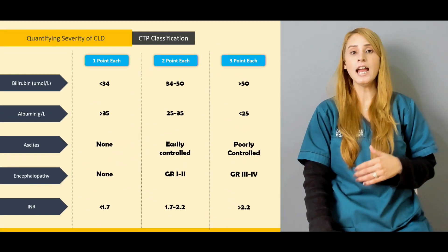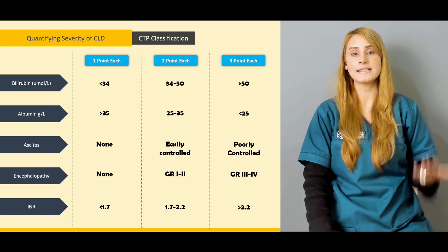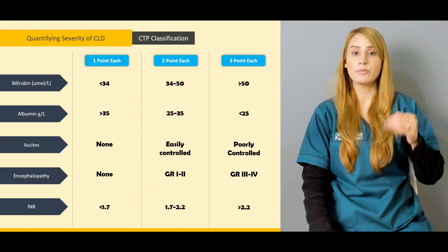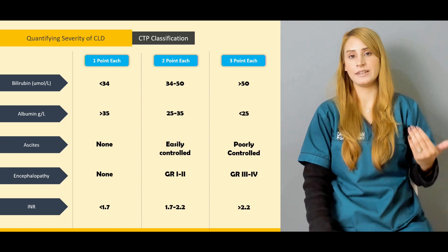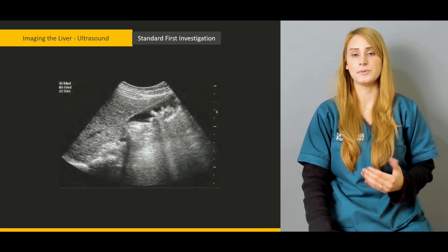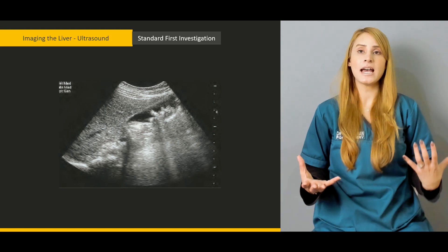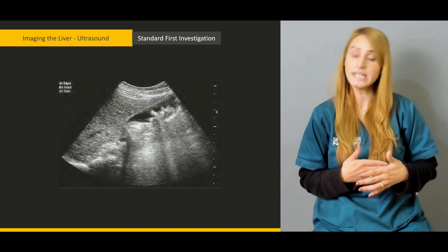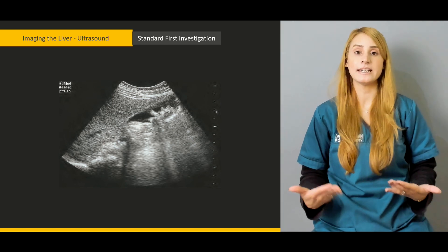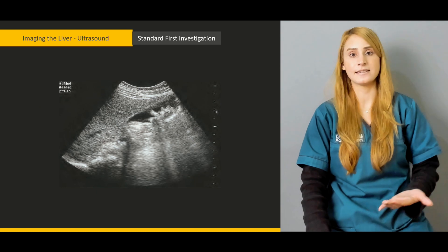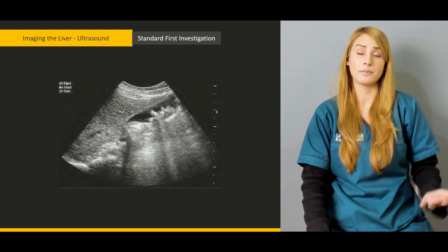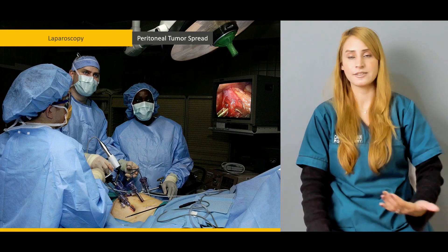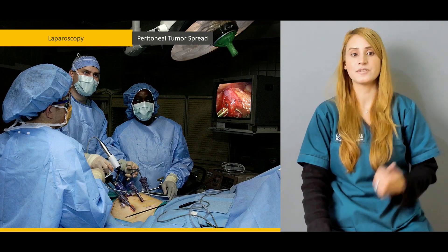In today's lecture, we'll be talking about the CTP classification, the different parameters and the points, which is actually going to help codify the severity of the chronic liver disease. Then we'll be talking about the important investigations in case of CLD specifically, and importantly to investigate other pathologies related to tumors and metastatic tumors as well.